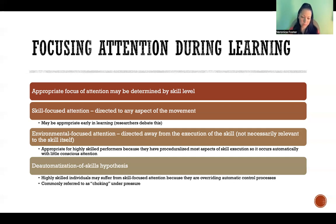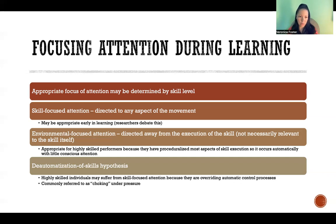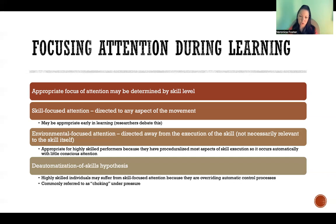The deautomization of skills hypothesis says that highly skilled individuals may suffer from skill-focused attention because they're overriding their automatic control processes. When someone is skilled and able to complete an action pretty automatically because of all the repetition, if they start paying too much attention to the action itself and how they're completing it, that can result in what we call choking under pressure. When we start paying too much attention to how many steps we're taking or how we're swinging the bat — instead of paying attention to the ball and the contact with the ball — thinking too much about the swing or the step into it is where we start to fail. That's where we choke under pressure.